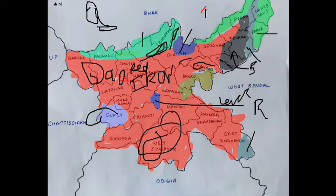What it lacks is nitrogen, phosphate, and similar nutrients. These things are not present in black soil, which leads to low fertility.